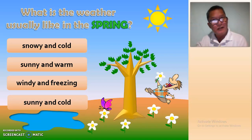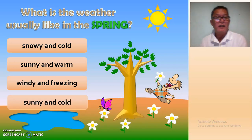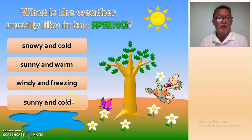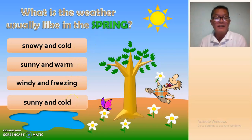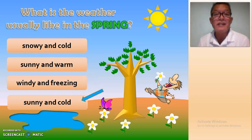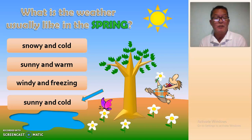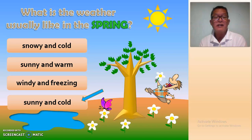What is the weather usually like in spring? The choices are: number one, snowy and cool; number two, sunny and warm; number three, windy and freezing; number four, sunny but cool. What is the answer? The answer is sunny and cold — number four. It is spring.